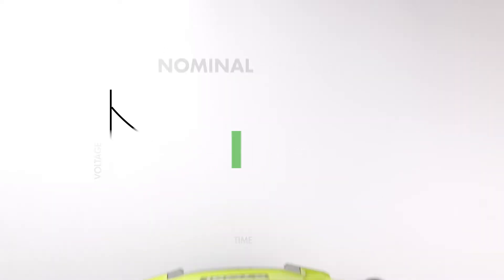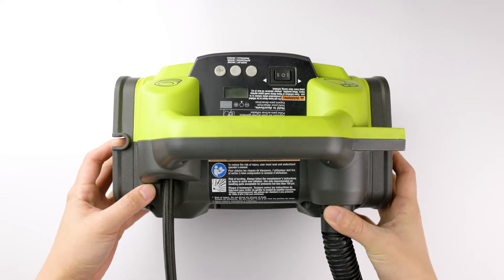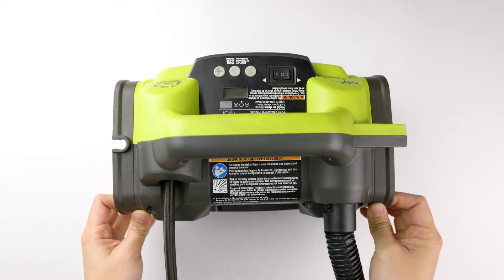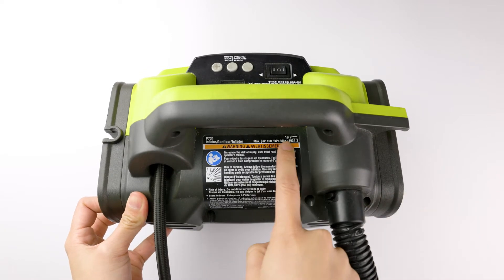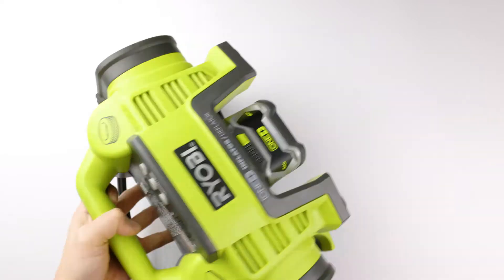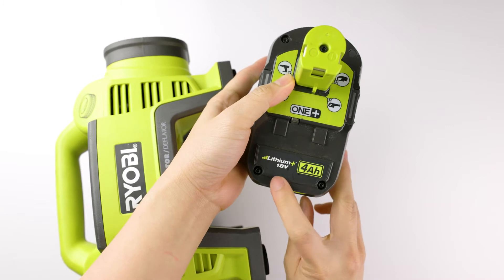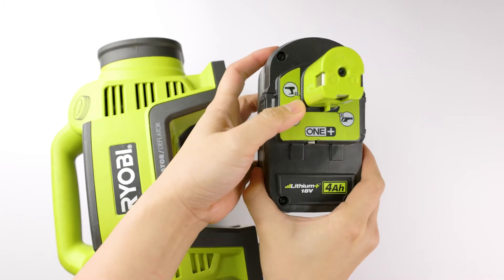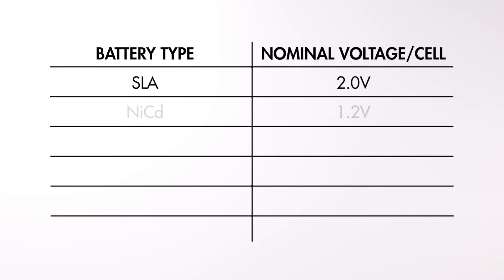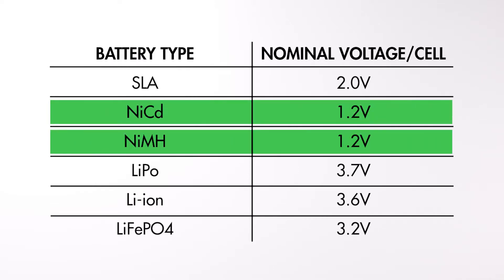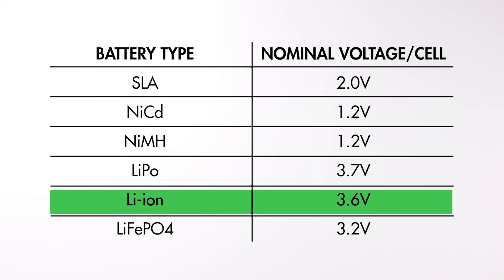For example, this air pump uses a battery with a nominal voltage of 18 volts. The info is labeled here on the device and on the battery as well. Each battery type will have a different nominal voltage per cell. For example, a NiCad or nickel metal hydride cell has a nominal voltage of 1.2 volts, and a lithium ion cell has a nominal voltage of 3.6 volts. Knowing this will help you determine how many battery cells your application requires.